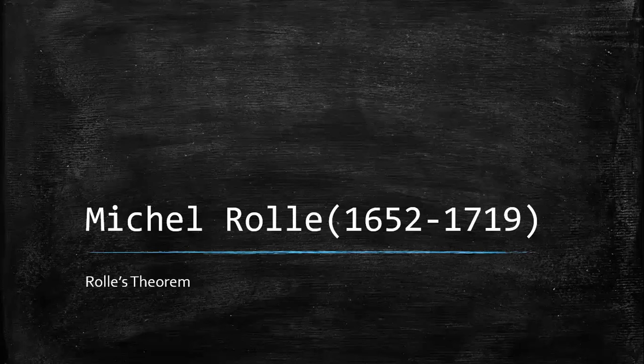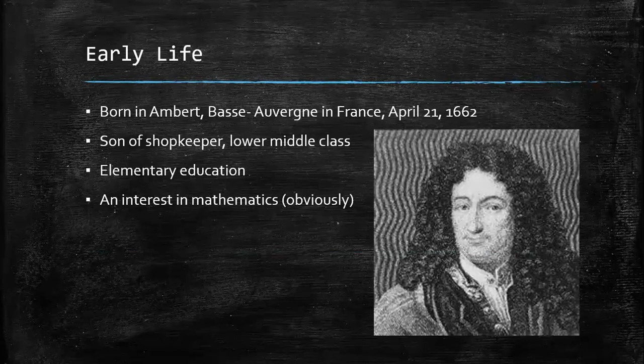Alright guys, we'll be talking about Michel Rolle today. He was born in 1652 and died in 1719, and he is responsible for Rolle's theorem. So, about his early life, Rolle was born in Ambert, Basse-Auvergne in France, April 21, 1662.